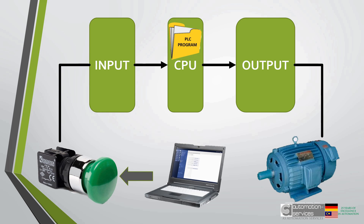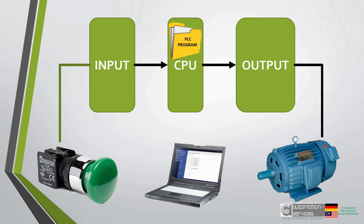Now, if we press the button, an electrical signal will be sent to the PLC. The PLC input will deliver this signal to the CPU, but it must present it in a digital format that the CPU can process. Because the CPU is a computer and cannot process the raw electrical signal. The CPU will process the data, receive and send the result to the output. The output converts the data to a raw electrical signal again and applies that to the motor and turns it on.